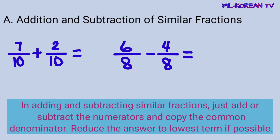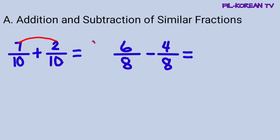Let's solve the problems using these steps. Let's add 7 tenths plus 2 tenths. Ang gagawin lang natin, i-plus natin yung numerators. 7 plus 2 equals 9. Then, kukupyahin lang natin ang common denominator na 10. So, yung answer ay 9 tenths. Itong 9 tenths ay nasa lowest term na ito kasi yung numerator at denominator ay magkasunod na number.